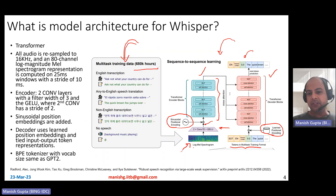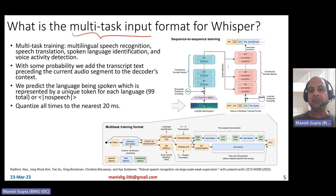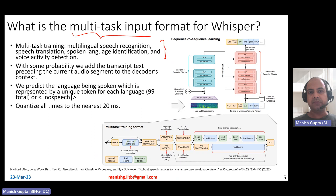How does the input look and how are multiple tasks encoded into the same pre-training architecture? Whisper does multitask and multilingual pre-training with tasks including multilingual speech recognition, speech translation, spoken language identification, and voice activity detection. Voice activity detection means detecting whether there is speech or not in a particular audio — for example, musical tunes have no speech. With some probability, the transcript text preceding the current audio segment is also added to the decoder's context, to help predict better given earlier context.